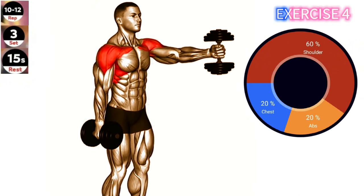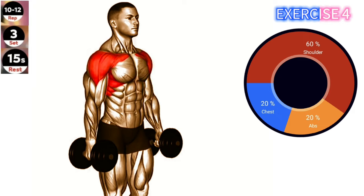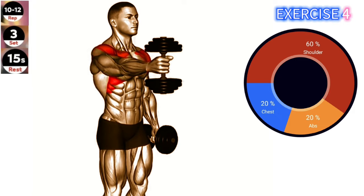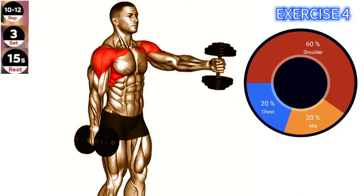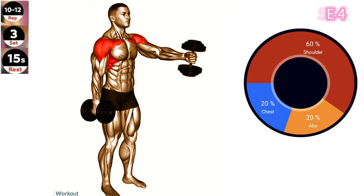Exercise 4. Dumbbell Standing Alternate Vertical Front Raises. Focus on maintaining control throughout the movement and avoid swinging your body to generate momentum. This will ensure that your shoulders are doing the work and prevent injury. Stand upright with a dumbbell in each hand, palms facing your thighs.